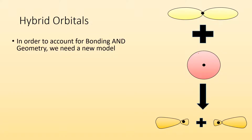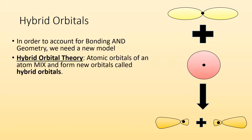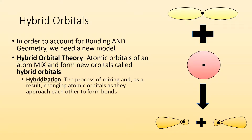In order to account for the bonding and the geometry, we need a new model of the atom. Hybrid orbital theory basically states that atomic orbitals of an atom mix and form new orbitals that we call hybrid orbitals. Hybridization is this process of mixing and, as a result, changing the atomic orbitals as they approach each other to form bonds. These atoms aren't isolated atoms anymore once they're in a molecule.